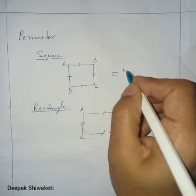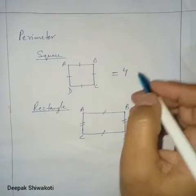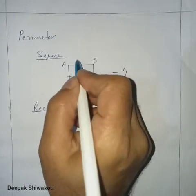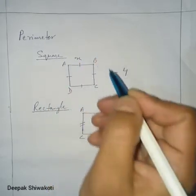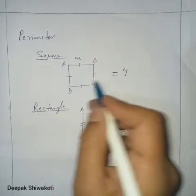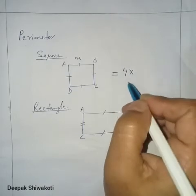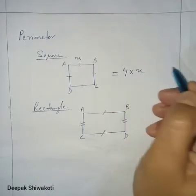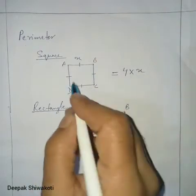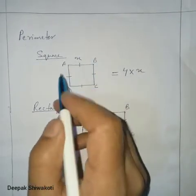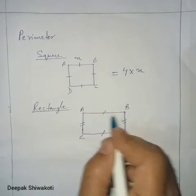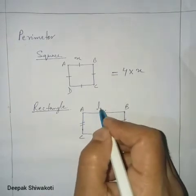Now for the formula: in a square, all four sides are equal. If the length of one side is x, then the perimeter of the square is 4 times x, or 4 times s, where s is the side length.